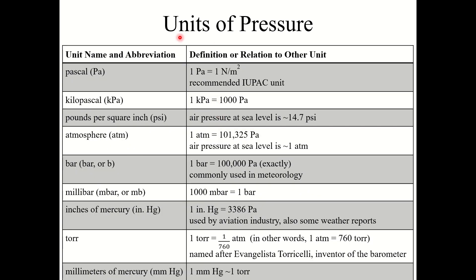There are many different units of pressure. The two most common units you will see in this chapter are kilopascals (kPa) and atmospheres. Kilopascals are derived from pascals, which is the recommended IUPAC unit. One pascal equals one newton per meter squared — newton is a unit of force, so it's really just force divided by area. Kilopascals then is just 1,000 pascals.